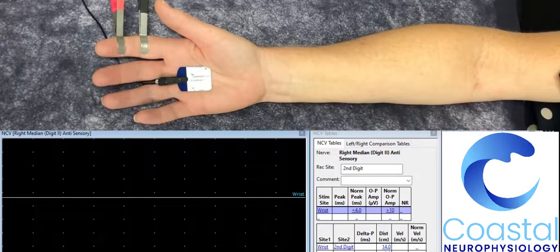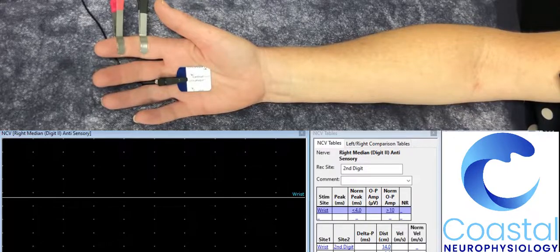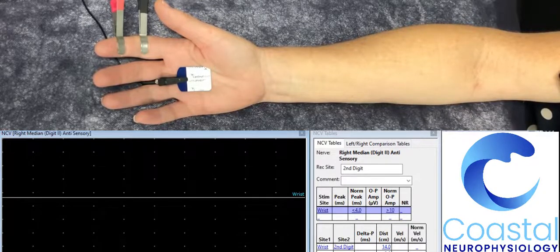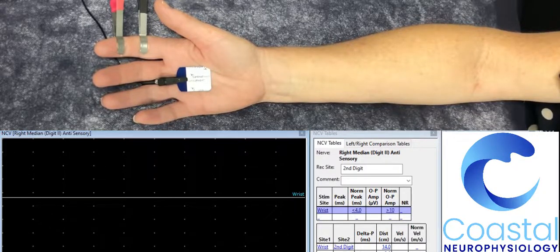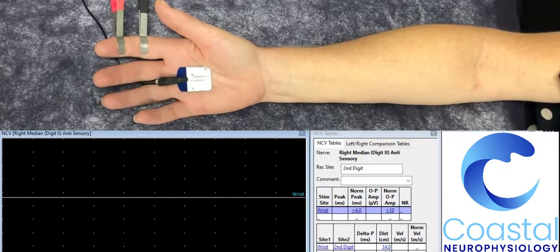The most simple way to understand how a nerve conduction is performed is to watch one. I have a volunteer and I'm going to test her median sensory nerve into her index finger.